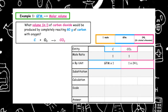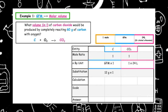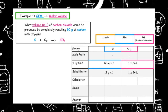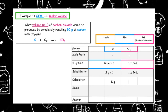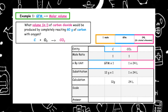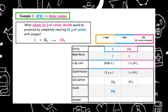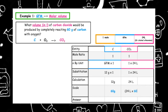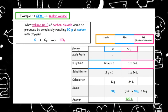We then substitute in the GFM. The GFM of carbon is 12, so 12 grams times one produces one times 24 litres. When we multiply that out, that tells us that 12 grams produces 24 litres. In the question, however, we have been given 60 grams of carbon. We do a cross multiply to scale over: 24 litres times 60 grams divided by 12, which gives us a total of 120 litres.